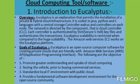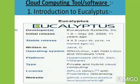Eucalyptus was founded out of a research project in the computer science department at the University of California and became a for-profit business called Eucalyptus Systems in 2009. Eucalyptus Systems announced a formal agreement with Amazon Web Services in March 2012, allowing administrators to move instances between a Eucalyptus private cloud and the Amazon Elastic Compute Cloud to create a hybrid cloud. The partnership also allows Eucalyptus to work with the Amazon product team to develop unique AWS-compatible features.